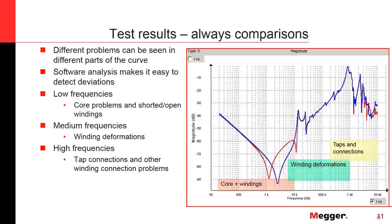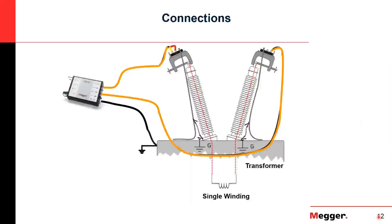In general, when looking at low frequencies, this is usually an indication of the core and how it's behaving, and a little bit of the windings as well. When we get into medium frequencies, you're really looking mainly at the windings. The first FRA devices were mainly used to look at windings, but by expanding to lower frequencies we found we can look at the core as well. And at very high frequencies, you're looking at taps, connections, and lead connections.